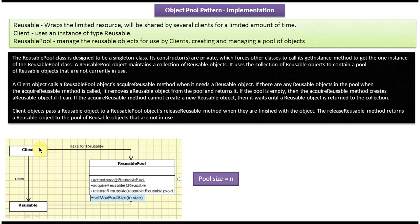The client is responsible for acquiring the reusable object, using it, and once it finishes its job, releasing it back to the ReusablePool so that another client can use it. To release the object, the client calls releaseReusable and passes the reusable object — it gets added back to the pool. The setMaxPoolSize method is used to set the pool size; if set to 10, only 10 reusable objects can be in the pool. This is how we implement the object pool design pattern.